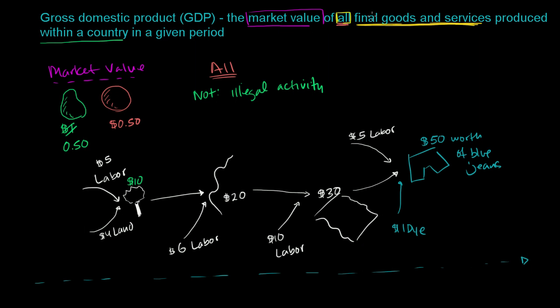If we didn't have the word final here, we just said the market value of all goods and services, then we would add this $5 to this $4, to this $10, to this $6. And because of the production of these jeans, we would get a very large number, a very large contribution to GDP. But that would be not even double counting, that would be triple or quadrupling or quintuple counting the value that's actually being created. Because all of this value is essentially being accounted for in this end $50.